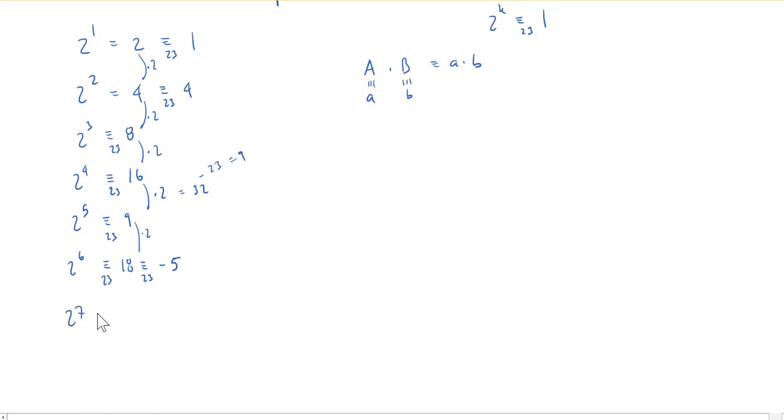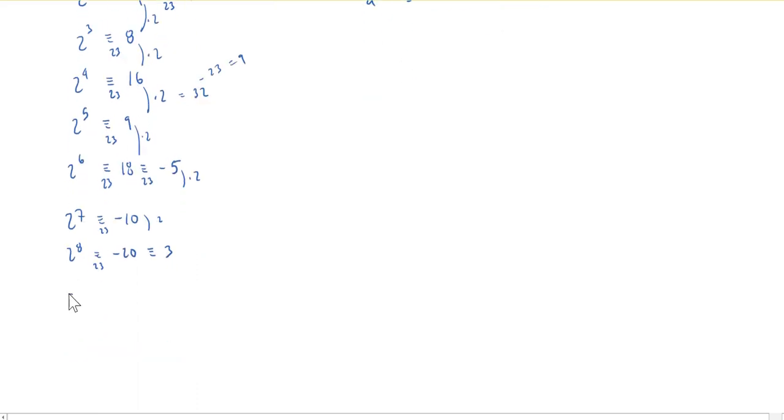So 2 to the seventh, again just multiply by 2, I get negative 10. How about 2 to the eighth? 2 to the eighth, I just multiply negative 10 by 2, and I'll get negative 20. Now negative 20 is starting to feel very big, so I'll add 23 to it and I'll get something congruent to 3. And 3 is really nice and small. I keep going. 2 to the ninth, well I just multiply 3 by 2 and I get 6.